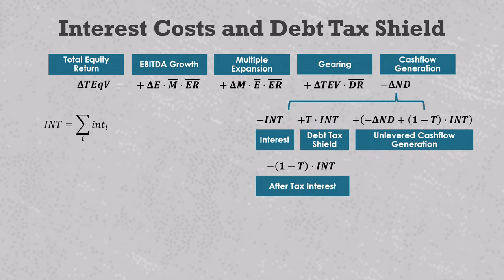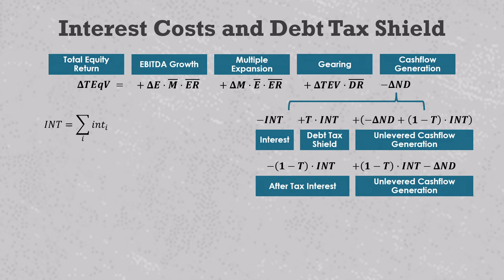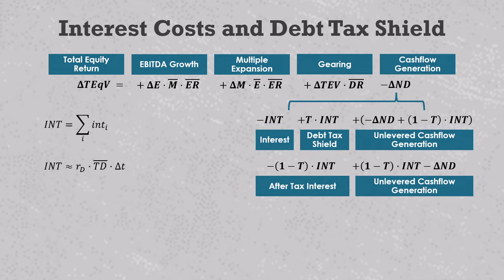We can simplify these formulas by combining the interest cost and the debt tax shield together into a single value driver, and you can do similar rearrangements with the unlevered cash flow generation term. This gives us two value drivers that always add up to the traditional cash flow generation, which is simply minus the change in net debt. That's fine as long as you know the cumulative interest payments, but LPs typically don't have access to this and even deal teams might have a hard time figuring out the number. A reasonable shortcut would be to take the product of the weighted average cost of debt and the average total debt over the holding period as an estimate of the average annual interest cost, then multiply that by the holding period in years.